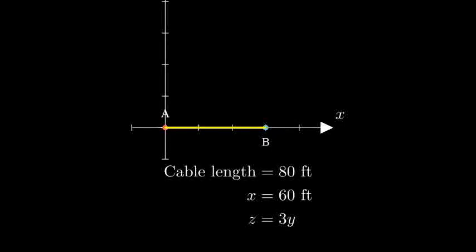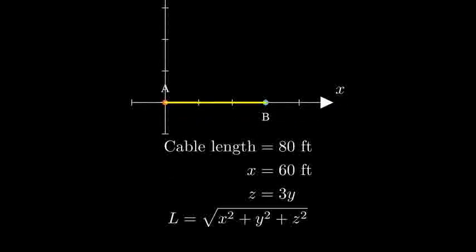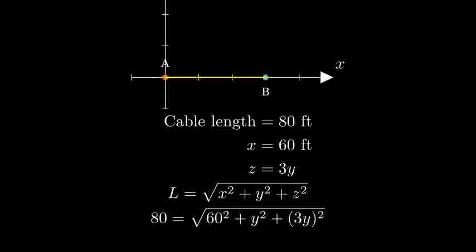To solve this, we'll use the distance formula in three dimensions. The length of the cable equals the square root of X squared plus Y squared plus Z squared. We can substitute our known values: 80 equals the square root of 60 squared plus Y squared plus 3Y squared.